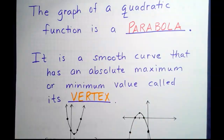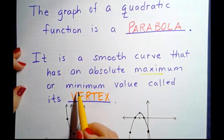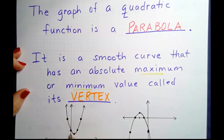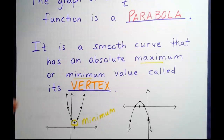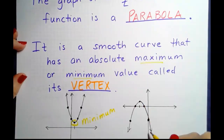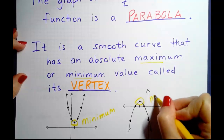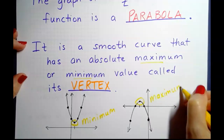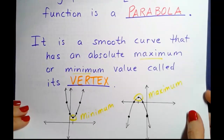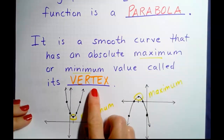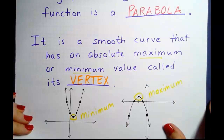We're going to be referring to those vocabulary words often, so you need to know them. If the parabola opens upward, the vertex is a minimum point. If the parabola opens downward, the vertex is a maximum value. The graph of a quadratic function is a parabola — a smooth curve with an absolute max or min at the vertex.